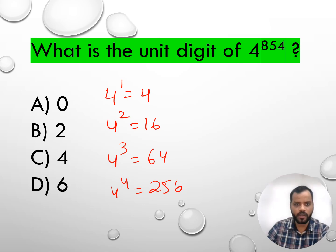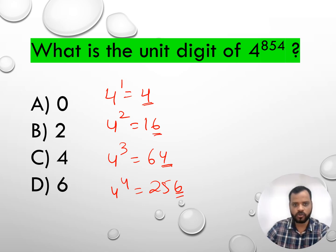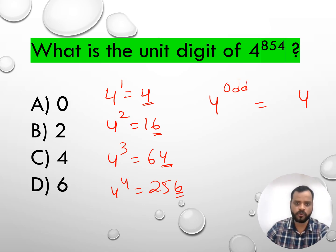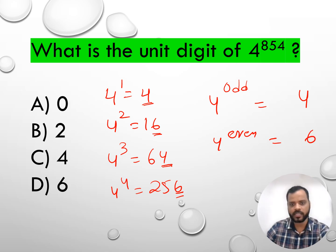When the power of 4 is odd, the unit digit is 4. When the power of 4 is even, the unit digit is 6. So 4 to the power of an odd number gives unit digit 4, and 4 to the power of an even number gives unit digit 6.